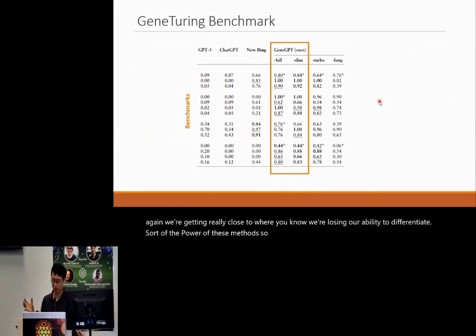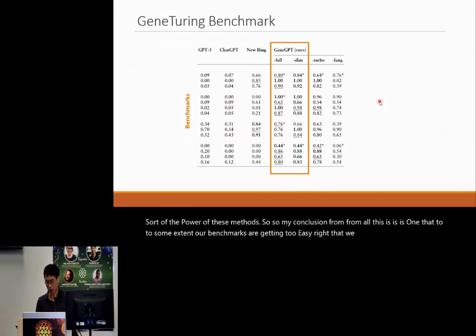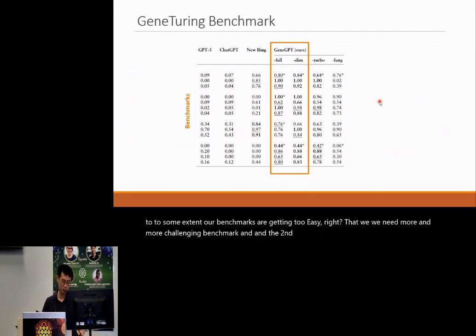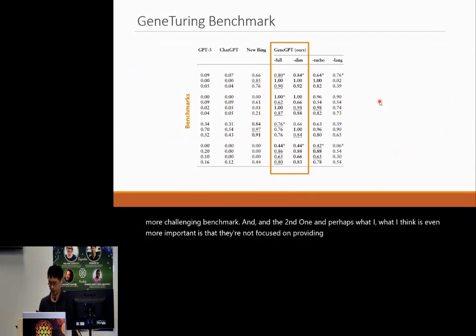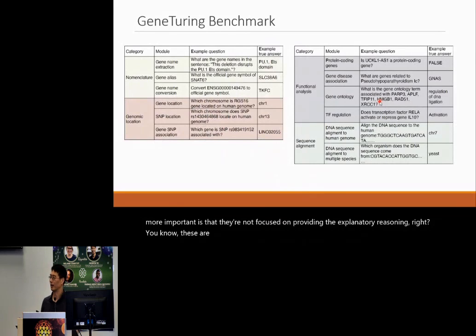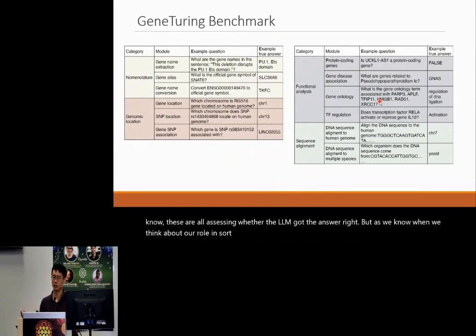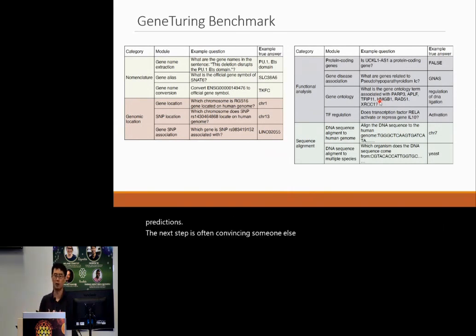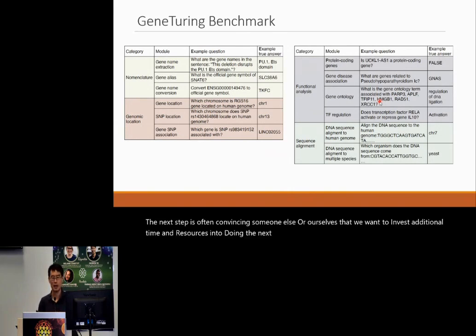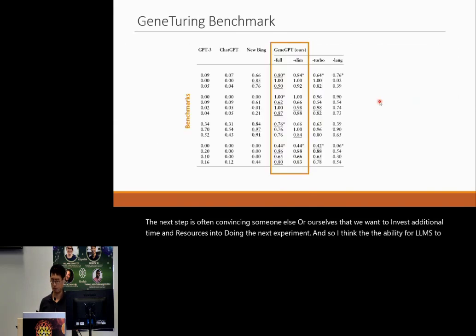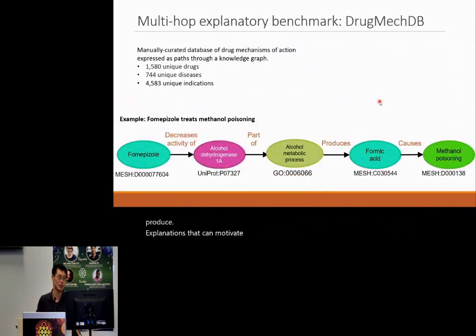Perhaps even more important is that current benchmarks are not focused on providing explanatory reasoning. These all assess whether the LLM got the answer right. But when we think about our role in the research ecosystem, when we make computational predictions, the next step is often convincing someone else that we want to invest additional time and resources into doing the next experiment. The ability for LLMs to produce explanations that can motivate those next experiments is really important.